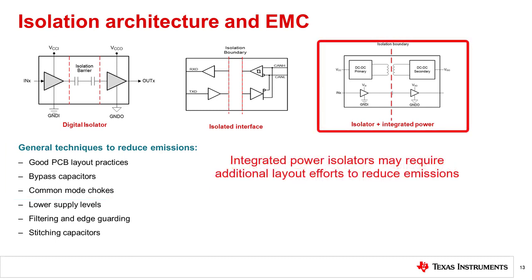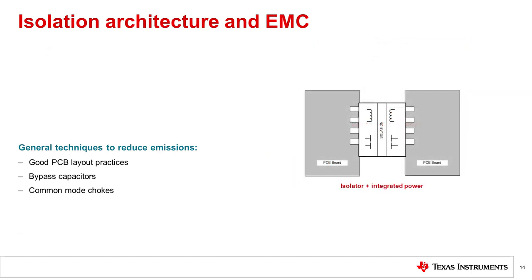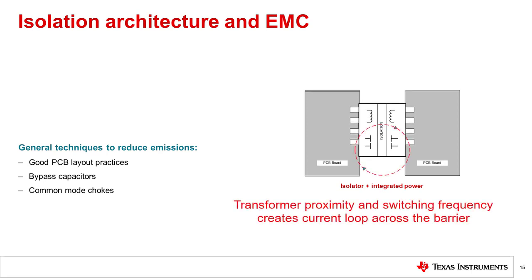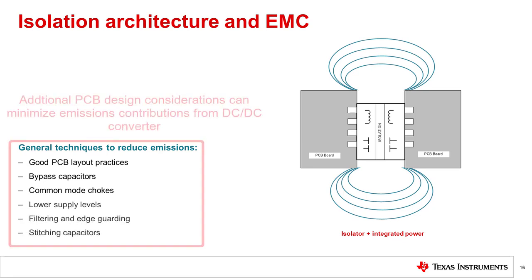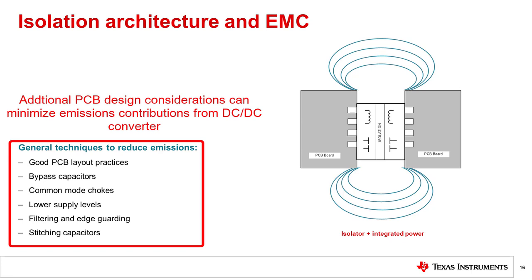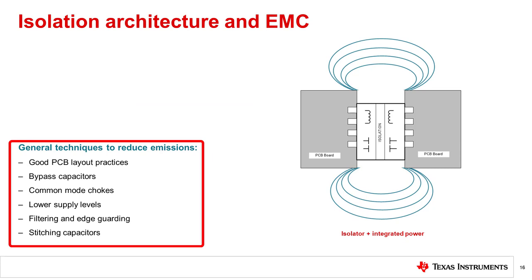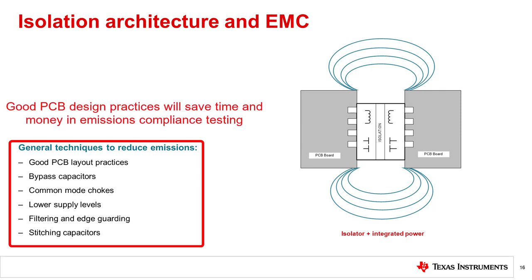Integrated isolated power devices, which include both a digital isolator and isolated DC-to-DC converter in a single package, present emissions challenges due to high-frequency switching across very small integrated transformers. Because the transformers are close together in the same package, a parasitic capacitance is created between the transformers which couples noise and generates a current loop. The closed loop acts as an antenna that, across the isolation ground and power plane gap, can act as a dipole transmitter. Specific actions can be taken at a PCB level to manage this challenge, most commonly through reducing power supply levels, use of stitching capacitors, and other filtering techniques. Regardless of which technology is used, implementation of fundamental best practices in PCB layout will minimize emissions contributions, saving time and the added cost of additional layout modifications post-emissions compliance testing.